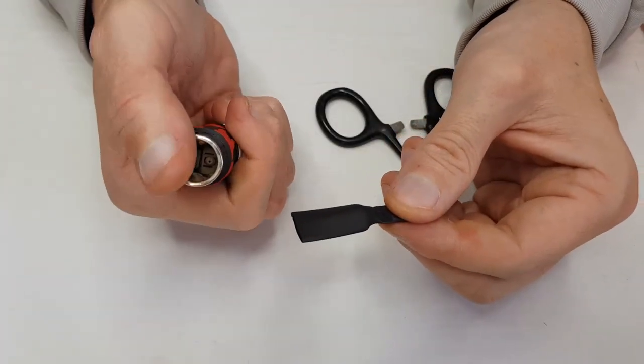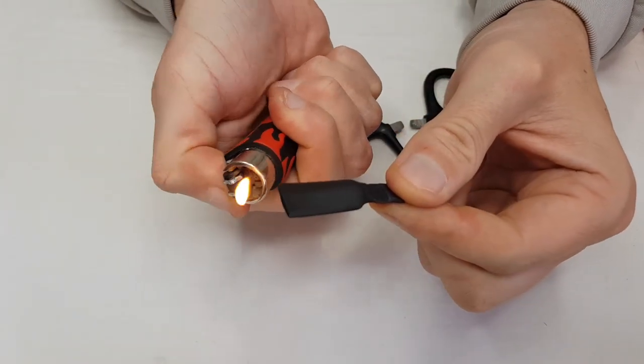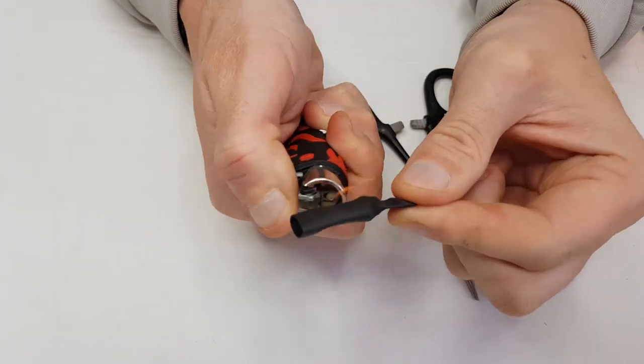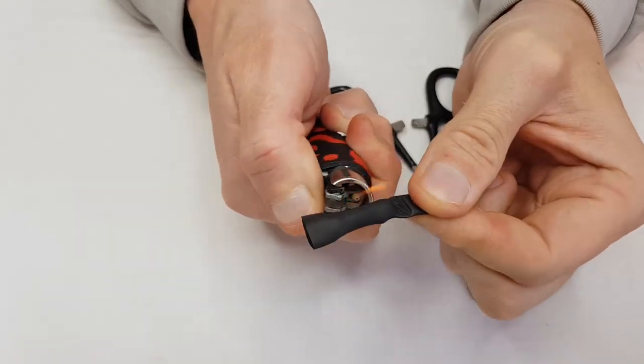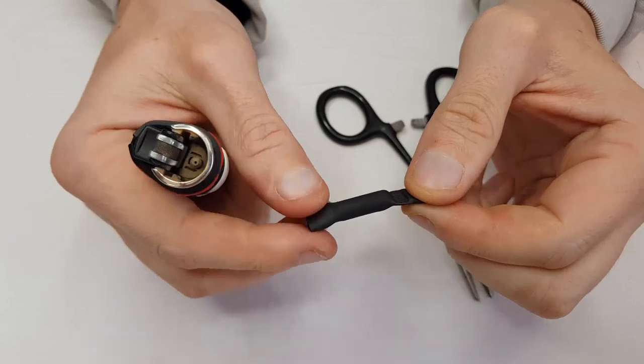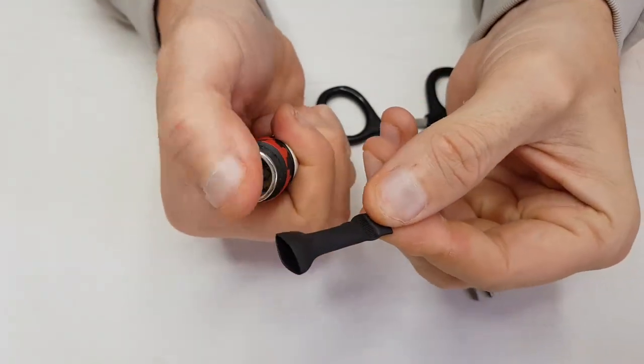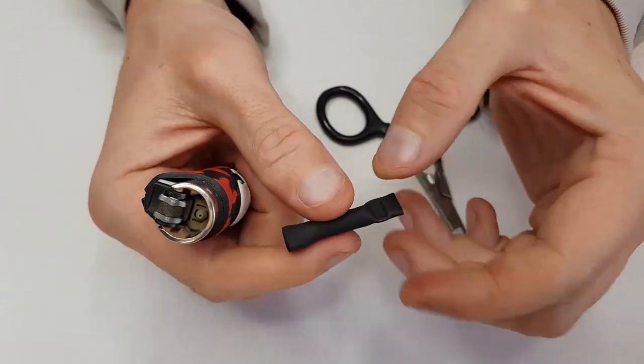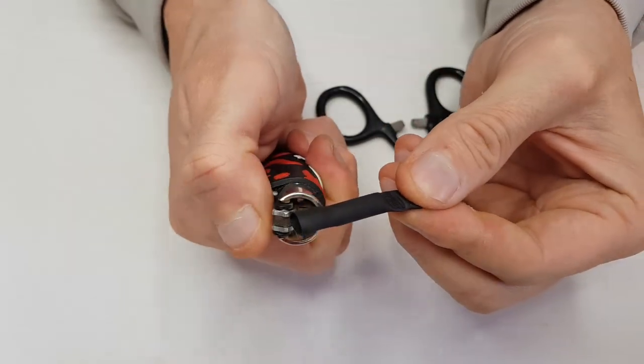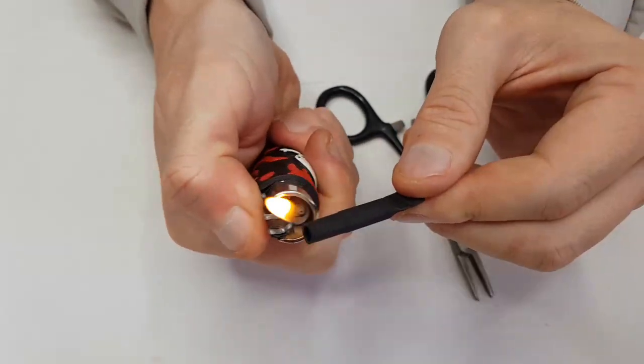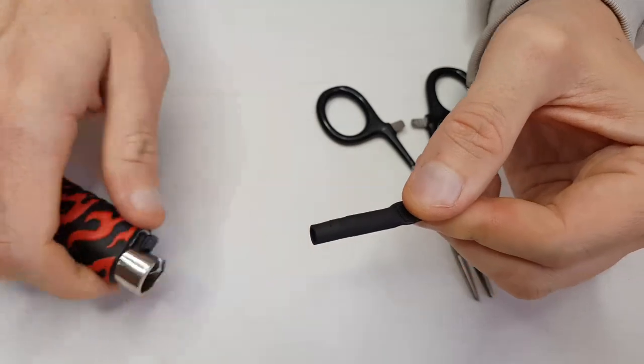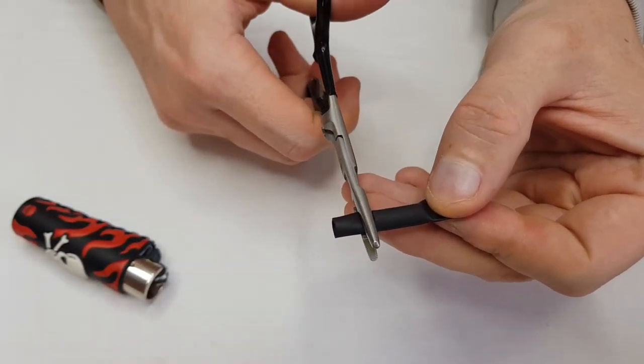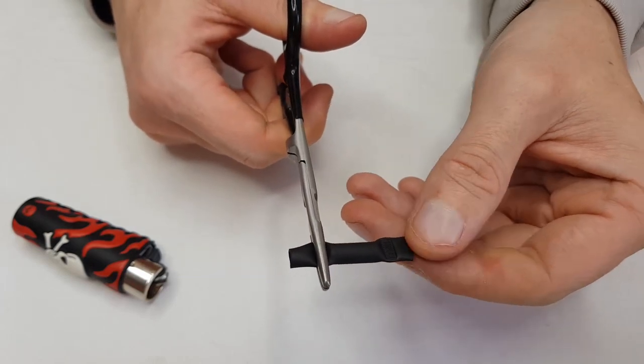Now I'm going to do the other side exactly the same way. Lightly apply that flame evenly around the rattle so that it shrinks nicely and uniformly, thereby effectively waterproofing it and insulating it at the same time and increasing its durability. Careful not to burn yourself. I'm going to seal the other end of the rattle. That's good for the forceps.